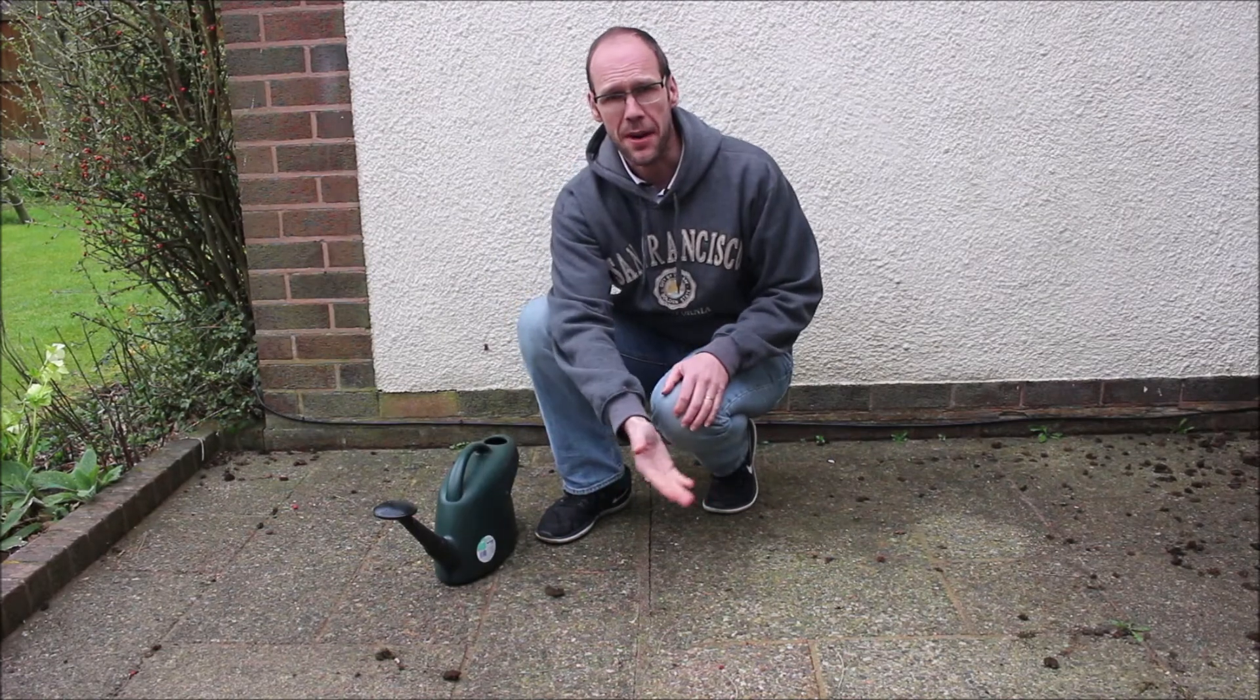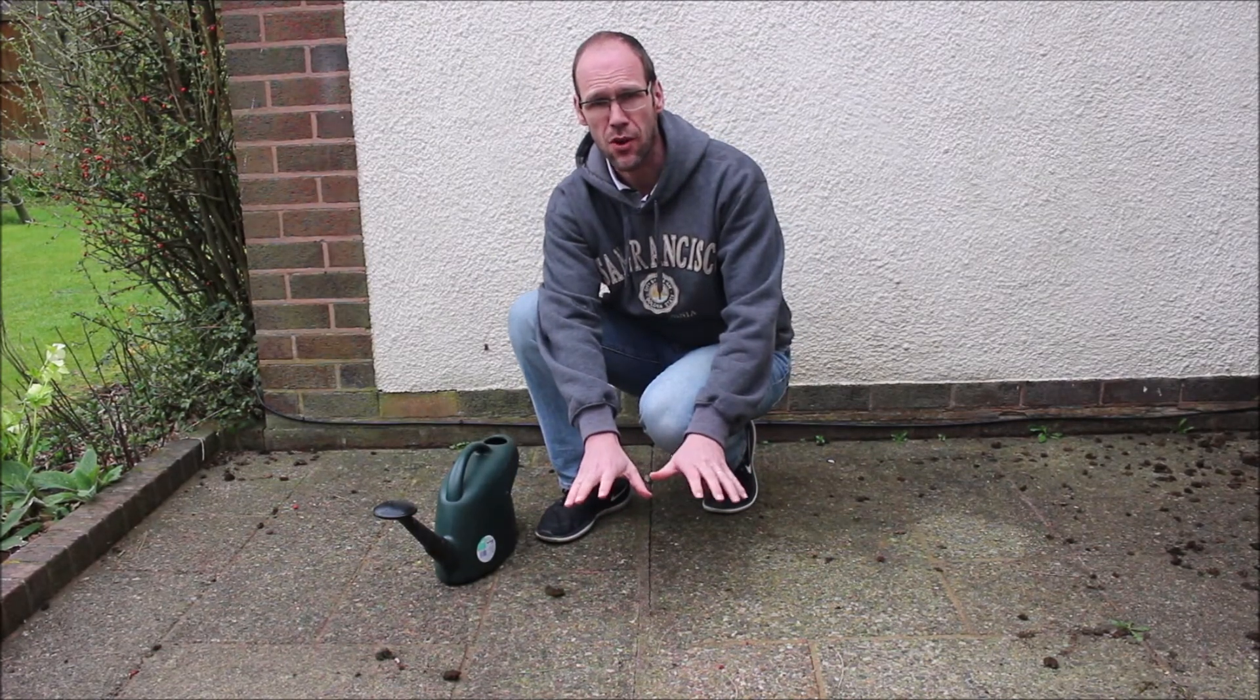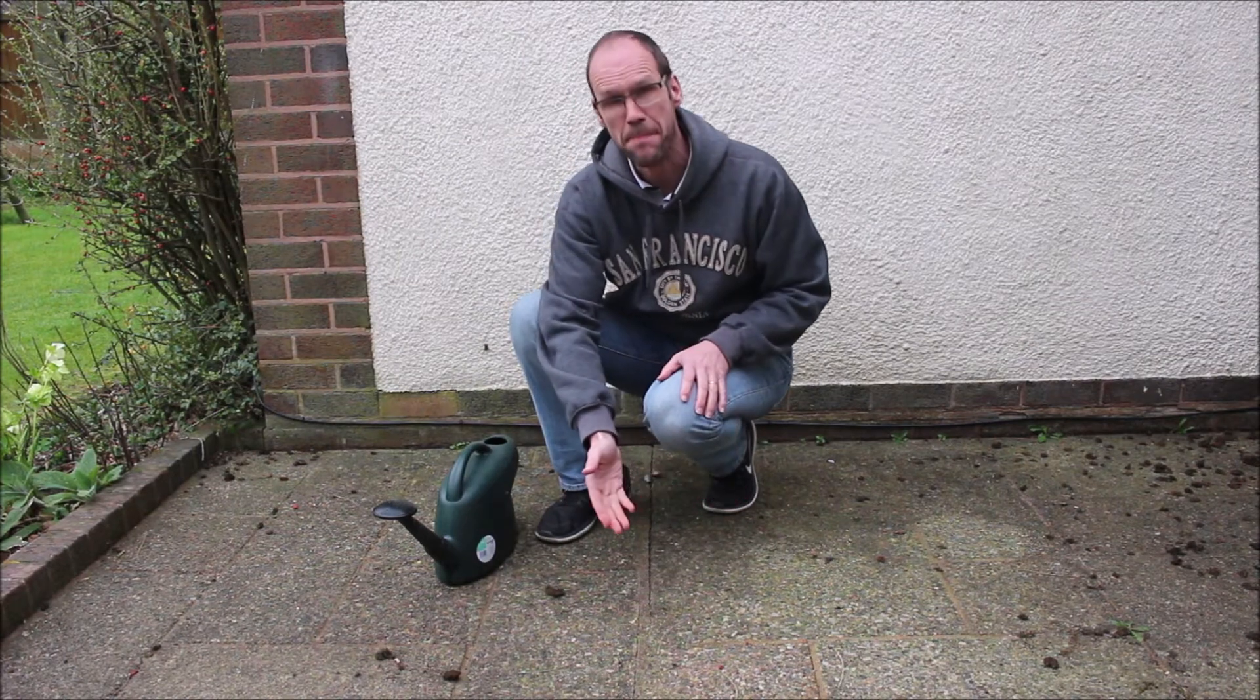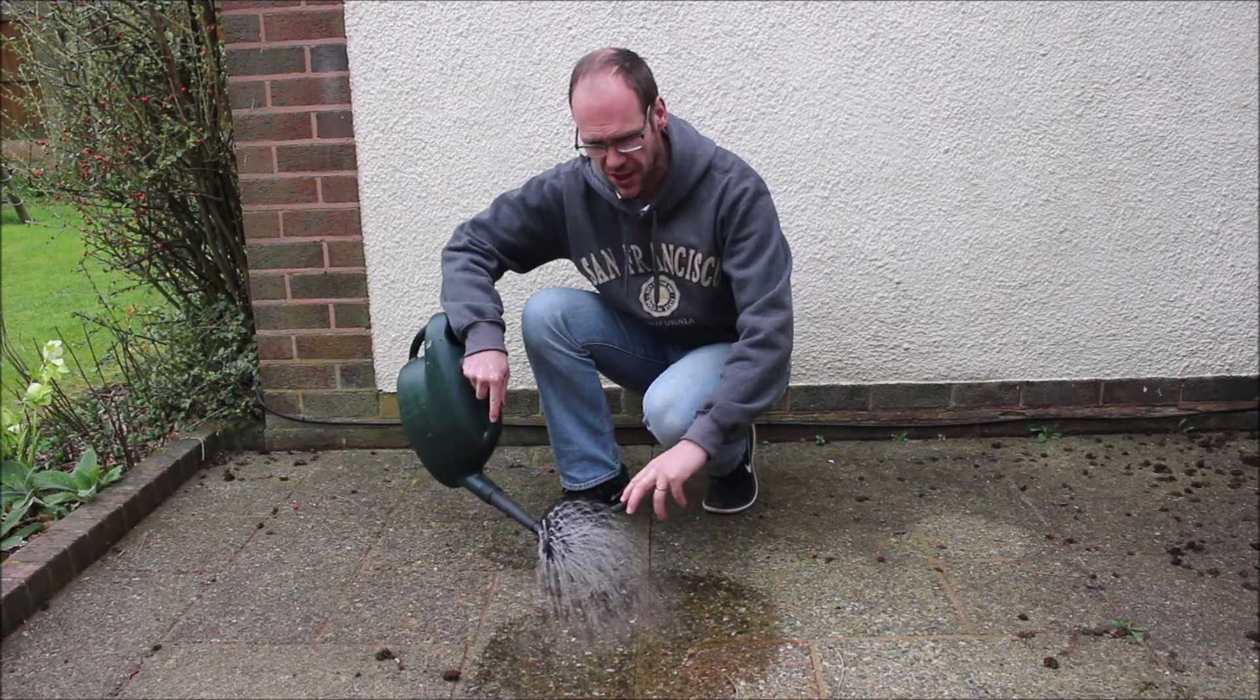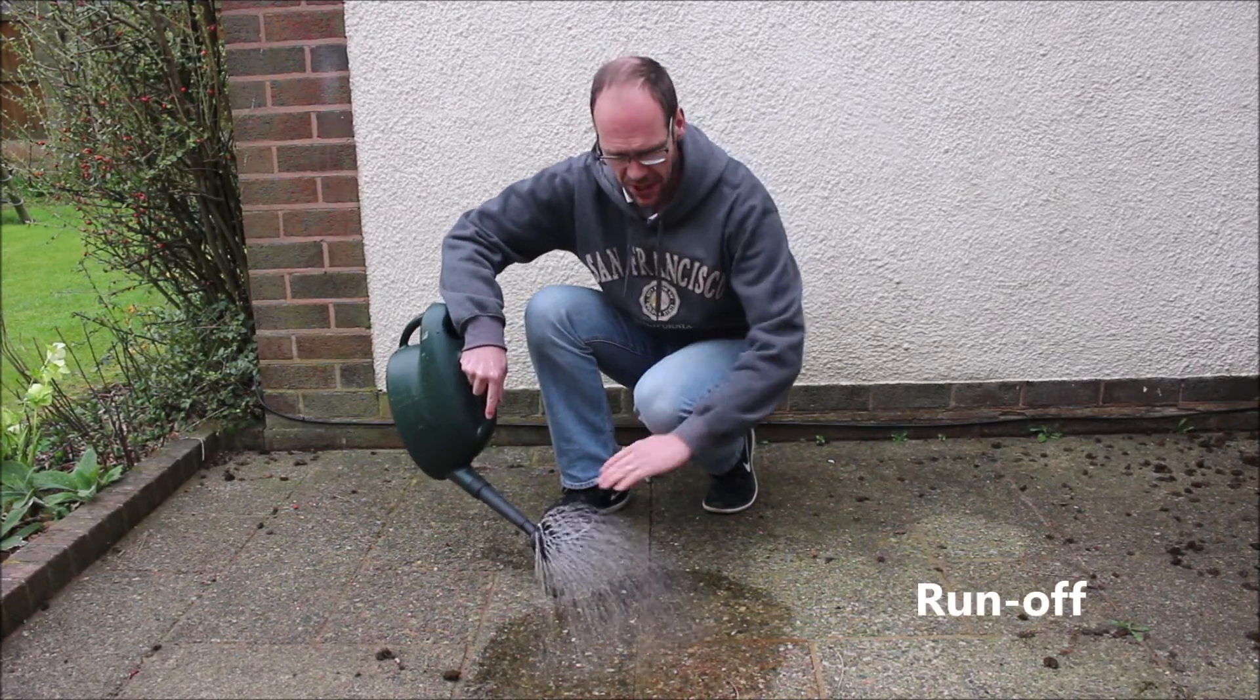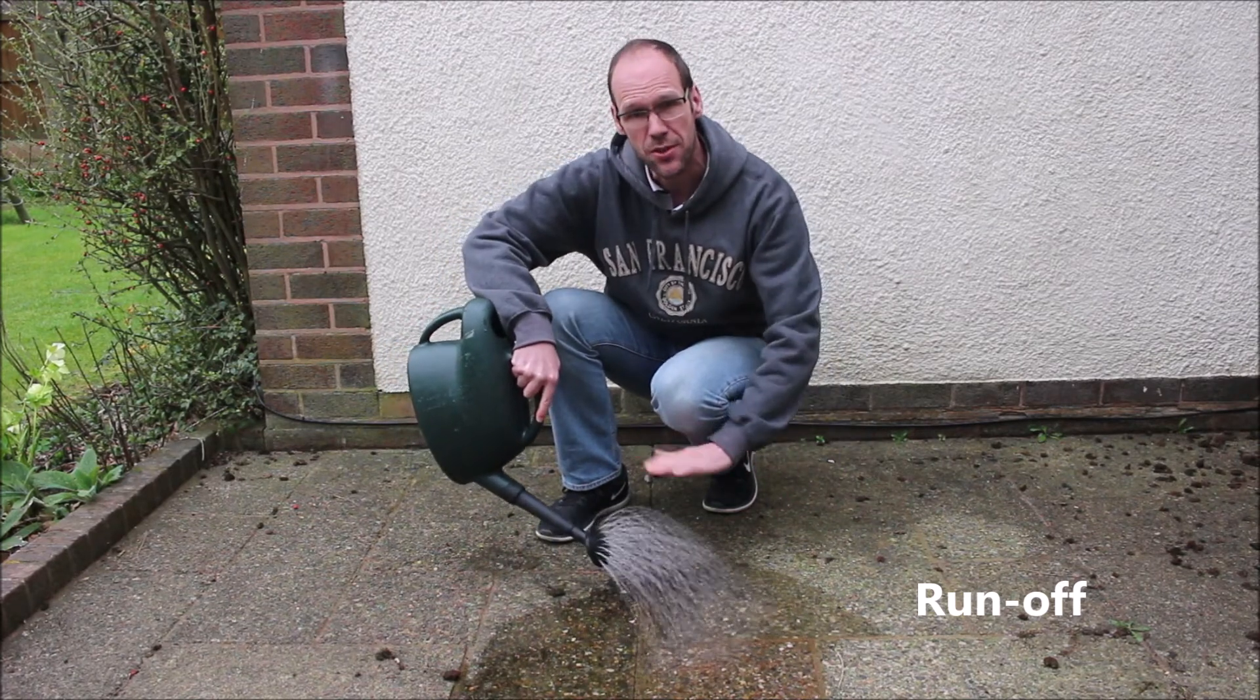Alternatively, the water might land on a hard concrete or tarmac or rock surface known as an impermeable surface. In this case, the water can't go into the ground and it runs off over the surface. We call this process runoff.